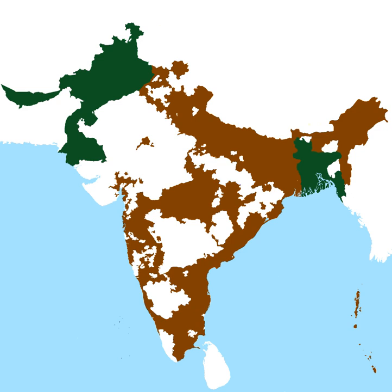Muhammad Ali Jinnah became the Governor-General of Pakistan, and Liaquat Ali Khan became the Prime Minister of Pakistan. Between October 1947 and March 1948, the rulers of several Muslim-majority states signed an instrument of accession to join Pakistan. These included Amb, Bahawalpur, Chitral, Dir, Kalat, Khairpur, Kharan, Las Bela, Makran, and Swat.